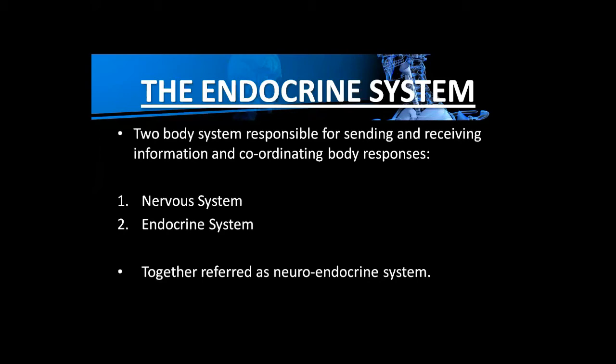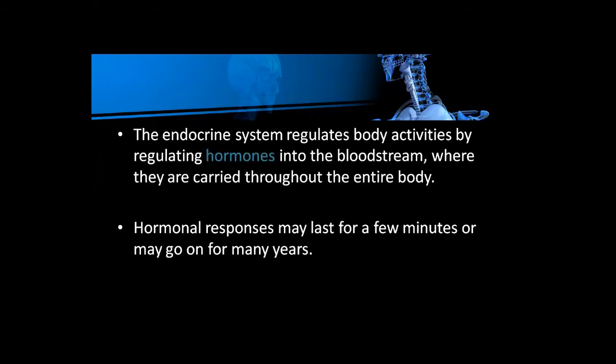The body system is responsible for sending and receiving information — meaning some parts of the body are related to sending information and some parts are receiving that information and coordinating the body with other parts. The endocrine system regulates body activities such as our happiness, fear, hunger, and anger. These are all the activities which are controlled by the endocrine system.